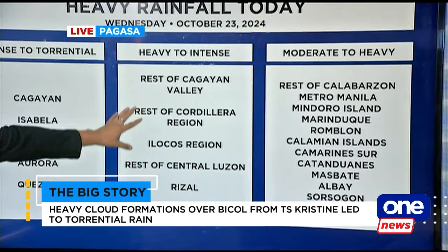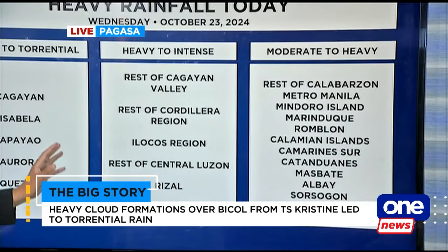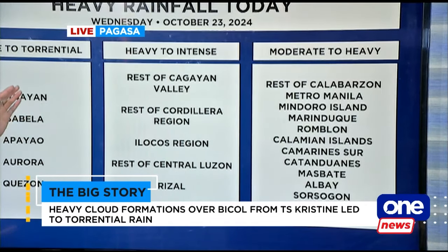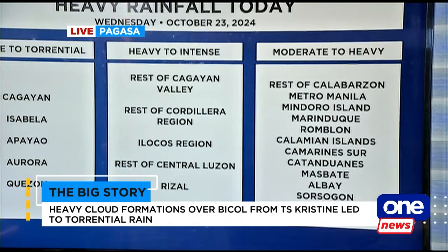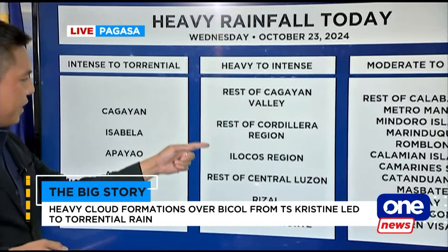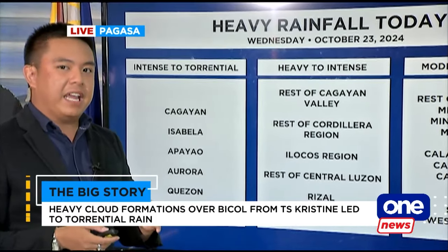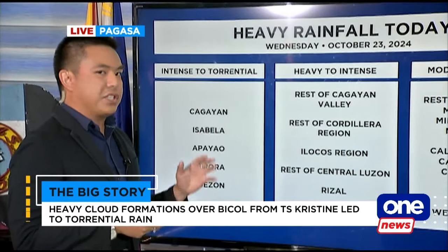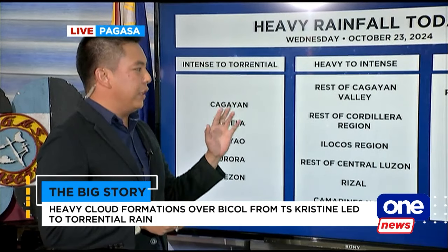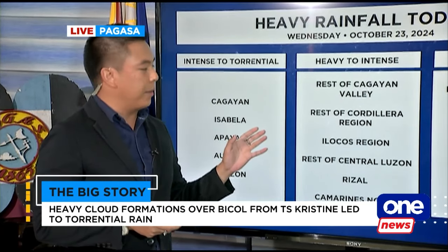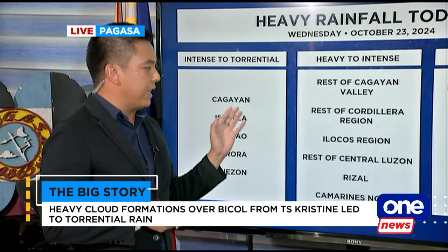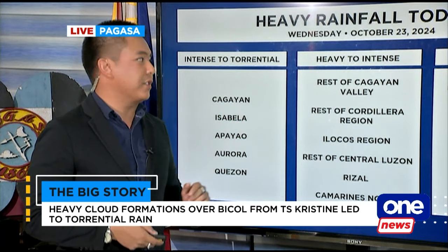Medyo malayo na ito, but again, because of the thickness of the storm — the radius — mas maraming lugar ang nakararanas ng pag-ulan. That's why mahaba yung listahan dun sa mga lugar which may experience moderate to heavy rains today: the rest of Calabarzon, Metro Manila, Mindoro Island — that's Occidental and Oriental Mindoro — Marinduque, Romblon, Calamian Islands, Camarines Sur, Catanduanes, Masbate, Albay, Sorsogon, and Western Visayas.